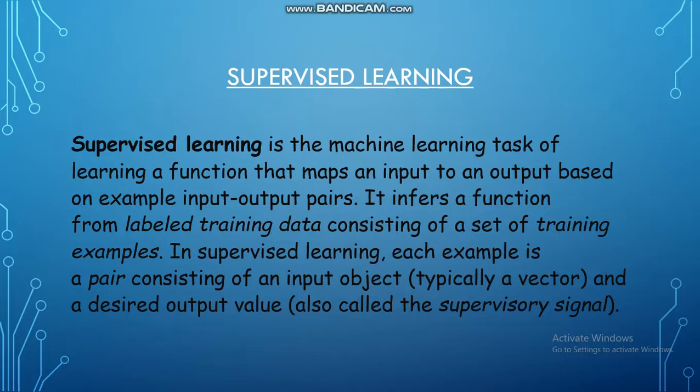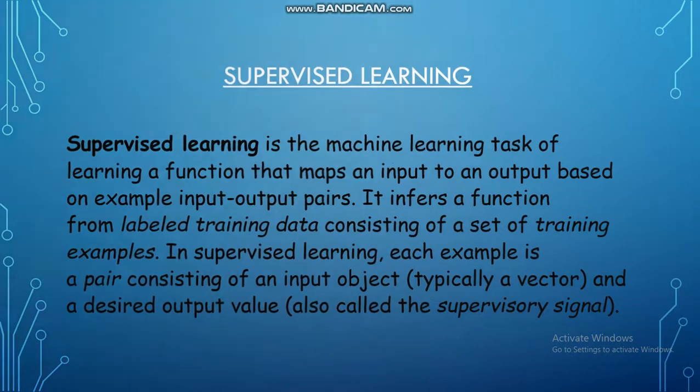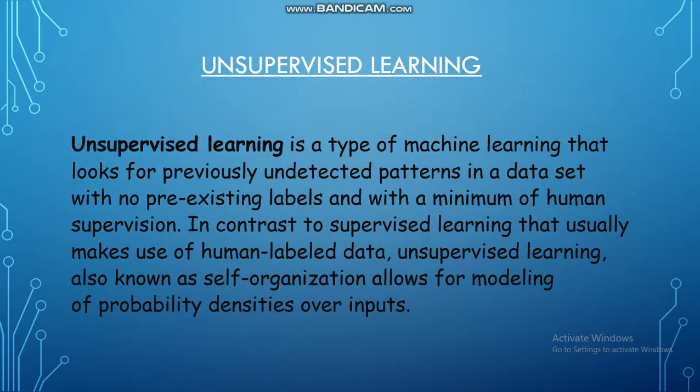an input to an output based on example input-output pairs. The third one is unsupervised learning, which is a type of machine learning that looks for previously undetected patterns in a data set with no pre-existing labels.